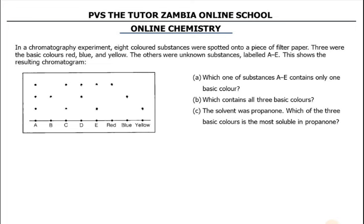Let's start. The question asks: which one of the substances A to E contains only one basic color? These here are the basic colors. To do this, get a ruler, then start drawing lines to see which of A, B, C, D, or E contains only one basic color.